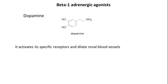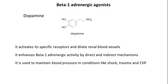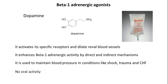Dopamine activates its specific receptors and dilates renal blood vessels. It enhances beta-1 adrenergic activity through direct and indirect mechanisms. It is used to maintain blood pressure in conditions like shock, trauma, and chronic heart failure — emergency situations where acute loss of blood pressure can be fatal. Orally it is not active because dopamine is quickly metabolized by COMT and monoamine oxidase enzymes. To escape metabolism, it is given as an intravenous drip.